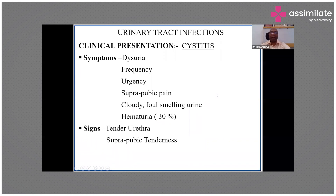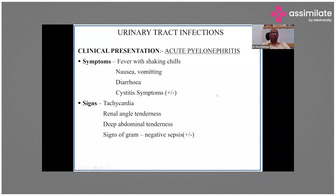Acute pyelonephritis presents very dramatically — fever, shaking, shivering, nausea, vomiting, and possibly diarrhea especially if caused by an enteric bacterium. Patients may or may not have symptoms of cystitis. Clinically there will be classic fever pattern, tachycardia, renal angle tenderness, a tender and tense abdomen, and sometimes signs of gram-negative sepsis — reduced blood pressure and respiratory distress due to acidosis.